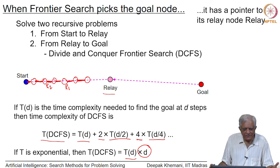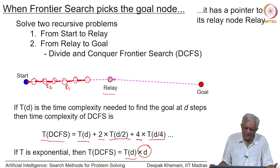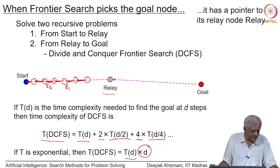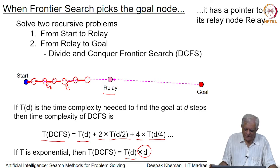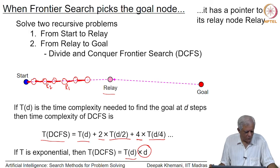What we have achieved here is that we have managed to cut down on the closed space requirement, but at the expense of this extra cost which may be at most d times the original cost, where d is the depth of the goal node.